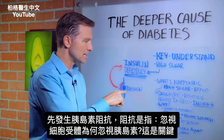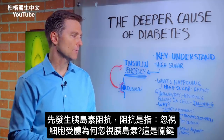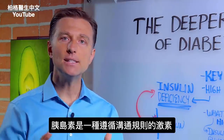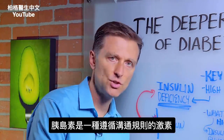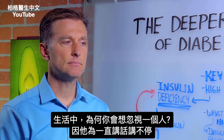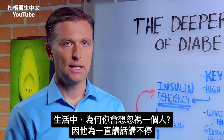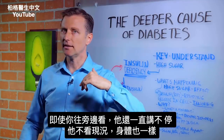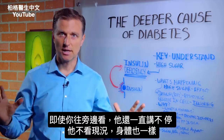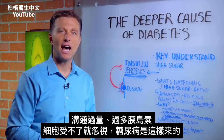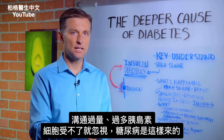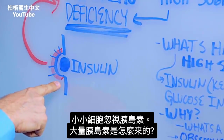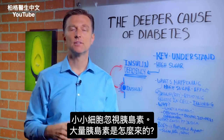So diabetes is an insulin deficiency. Here we have a situation where we have insulin resistance — really, resistance means ignoring. Why would this little receptor ignore insulin? That's the key to understanding the whole picture. Insulin is a hormone, and hormones follow the law of communication. Just like in life, why would you ignore someone? Typically because they're obsessively communicating. You ever talk to someone who just will not shut up? They keep talking over and over. The same thing happens with the body — there's too much obsessive insulin, which then causes the cell to ignore that hormone. That's really what diabetes is: your cells are ignoring insulin.